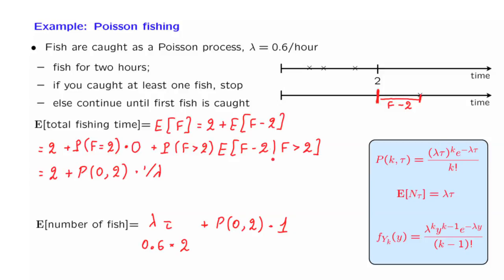Notice that in answering both of these last questions, we used the divide and conquer strategy twice: first dividing the time horizon into two pieces and dealing with each separately, and then, to handle the time after time 2, dividing into two different scenarios and applying the total expectation theorem.